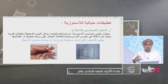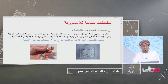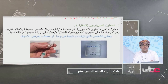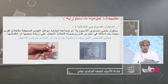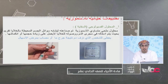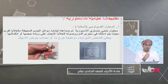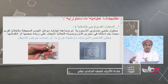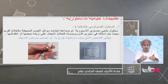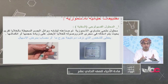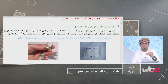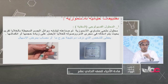من التطبيقات الحياتية للإسموزية أيضاً: المحلول الفسيولوجي أو السقاية. الإنسان المريض يذهب إلى المستشفى وتُعطى له سقاية، وهي محلول ملحي يُعطى عبر الوريد. محلول الجفاف يُعطى عن طريق الفم في الحالات البسيطة، بينما السقاية تُعطى عبر الوريد في الحالات المتقدمة التي فقد فيها المريض سوائل كثيرة.